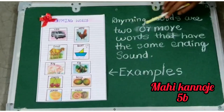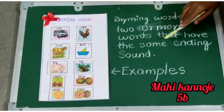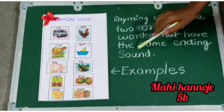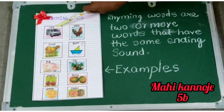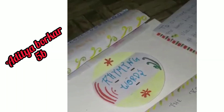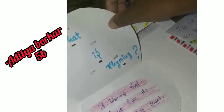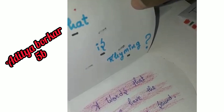Rhyming words are two or more words that have the same ending sound. Some examples — my name is Aritha Borkar, I am studying in class 5. My project is rhyming words. Let's start. Rhyming words. What is rhyming? Words that rhyme have the same last sound.